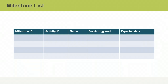After defining the activities, creating the activity list, and deciding where the milestones are located on the WBS, you record them in a milestone list. Here, you give them an ID number for tracking purposes and state any associated activities, the events they trigger, and the expected date.